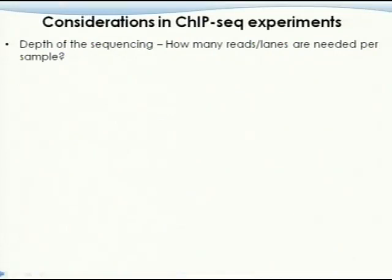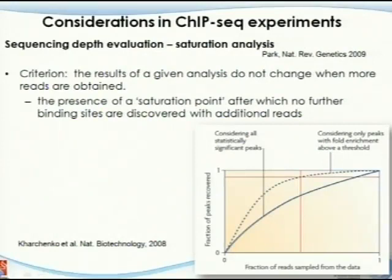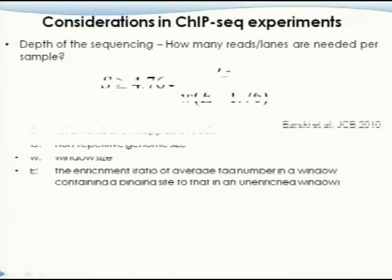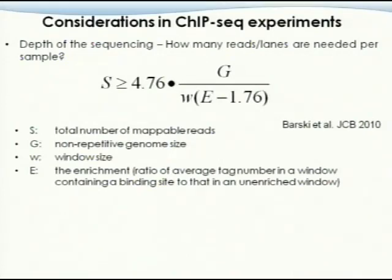Before running the experiment, how can you estimate how many reads you need? An equation published in 2010 by the same group from the 2007 Cell histone mapping paper — from Snyder's group at NIH — helps make that judgment. The total number of reads S required is determined by several factors.